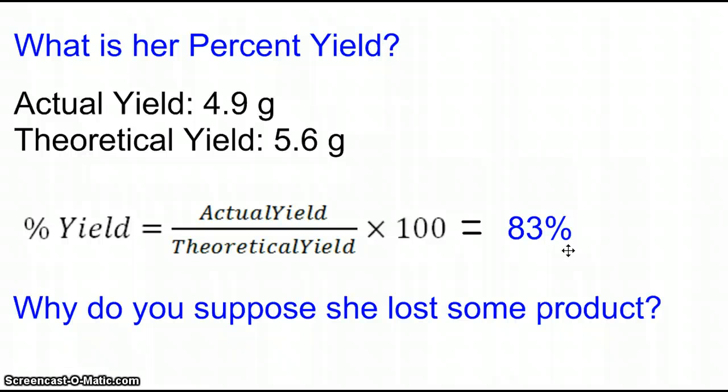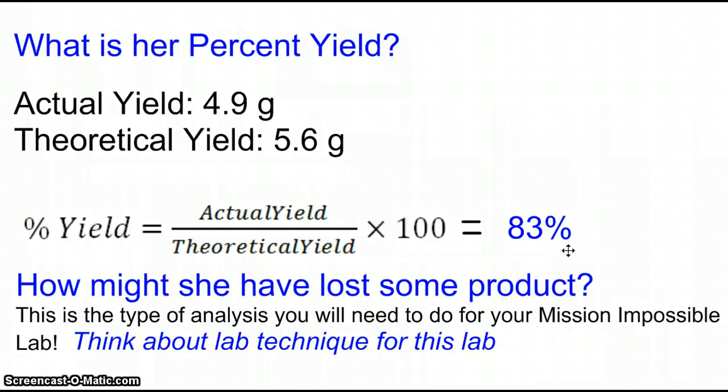So, what could have caused this problem? Start thinking about that. That's one of our goals for the quarter, is to begin analyzing our experimental results, and come up with some of the errors that could have occurred. When you are working on your Mission Impossible Lab, this is another example of something for you to think about. You will have done the experiment. You will have seen and made, hopefully, recorded some observations about some times when the product might have been lost, perhaps. So, think about that as you're going through experiments from this point forward.